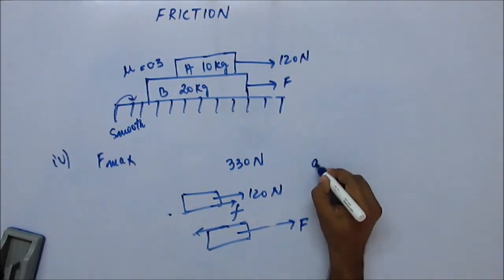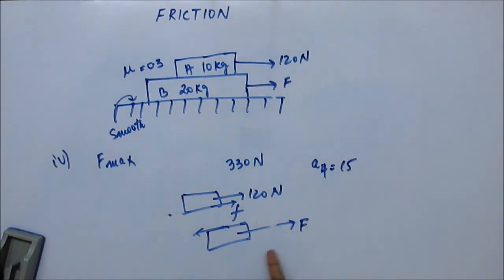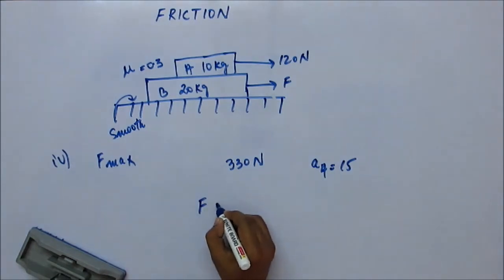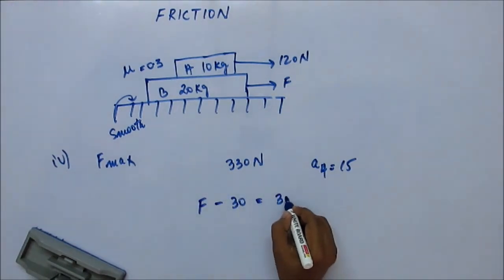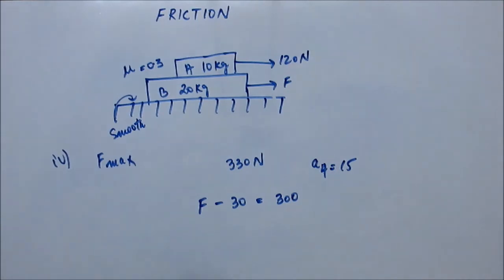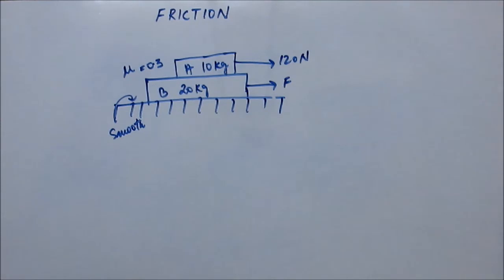For maximum force, limiting friction acts in support of A's acceleration. Acceleration of A = (120 + 30) / 10 = 15 m/s², and acceleration of B should also be 15 m/s². So for B: F minus 30 = 20 × 15, giving F = 330 Newton. That is the maximum force. If you keep increasing force beyond 330 Newton, slipping will occur and you cannot stop it.